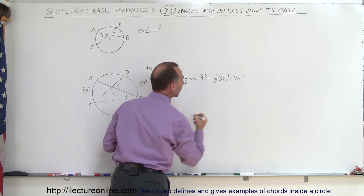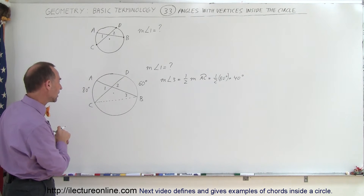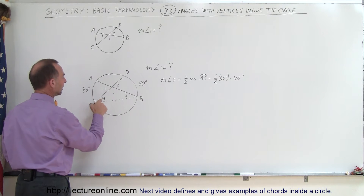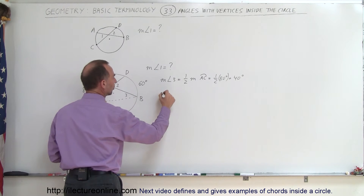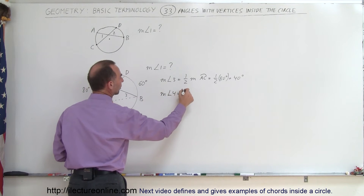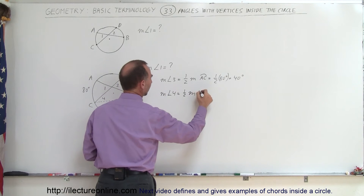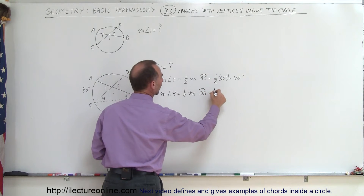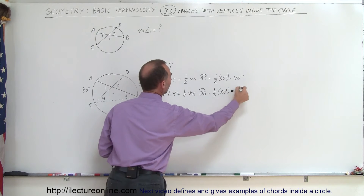Now let's call this angle 4. Angle 4 is the inscribed angle for the arc from D to B. So the measure of angle 4 equals one-half times the measure of arc D to B. The arc from D to B is 60 degrees, so the measure of angle 4 equals one-half times 60 degrees, which equals 30 degrees.